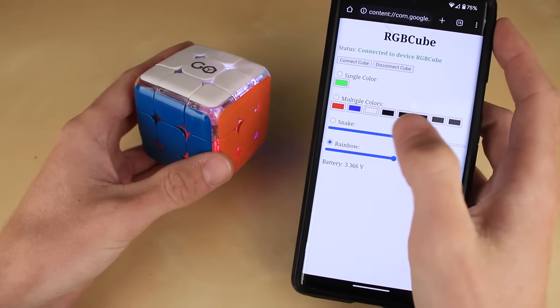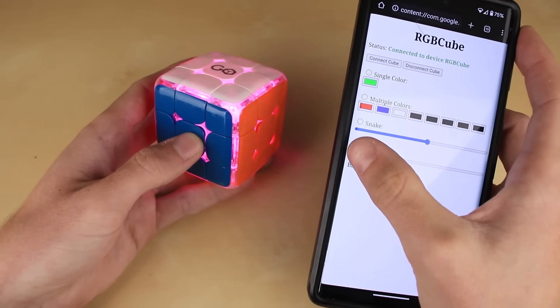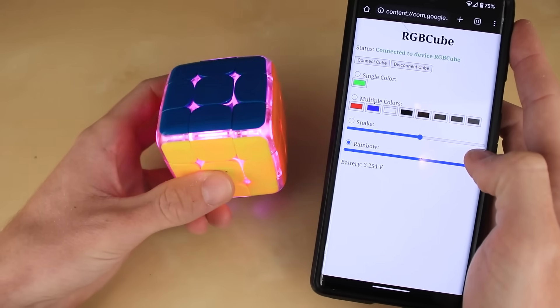And finally, the last major mode is rainbow mode, which is pretty self-explanatory, just pulsing different RGB colors. We can make it really slow, just very slowly breathing throughout the colors. Or, again, party mode super fast.